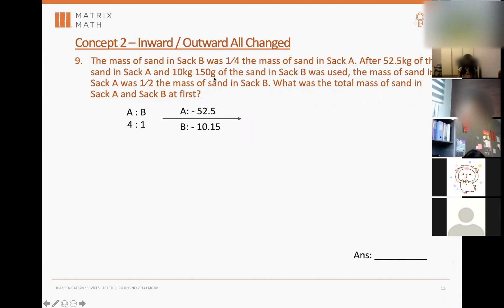Ten kilogram 150 grams is 10.15 kilograms. Divided by a thousand you get kilograms. After you remove this amount of sand, the ratio of Sack A was half the mass of sand in B. So A will be 1, B will be 2.